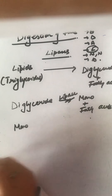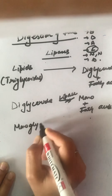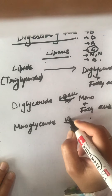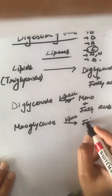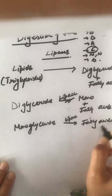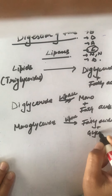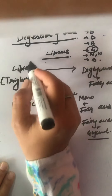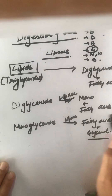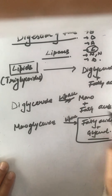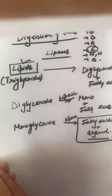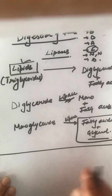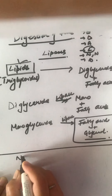The monoglycerides are further acted upon by lipase and converted to fatty acids and glycerol. The end products of fat digestion are fatty acids and glycerol.